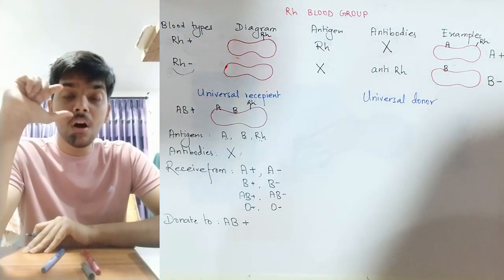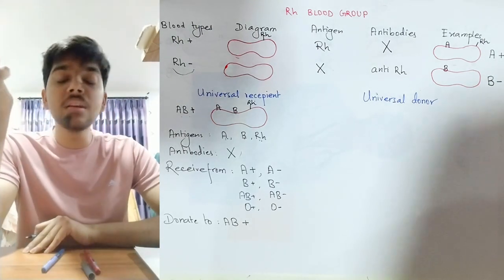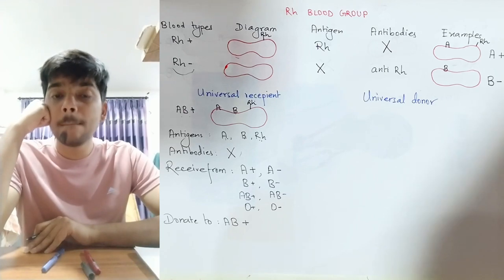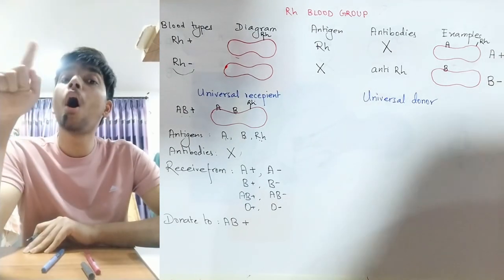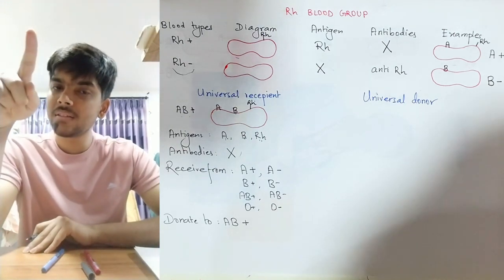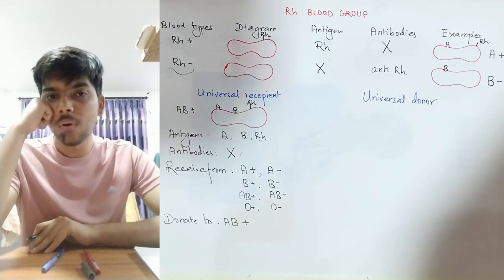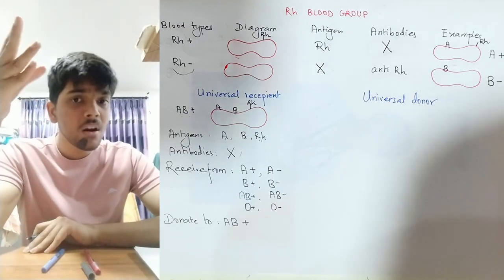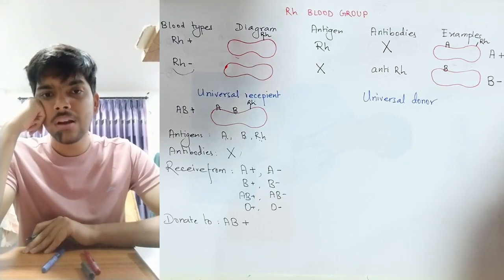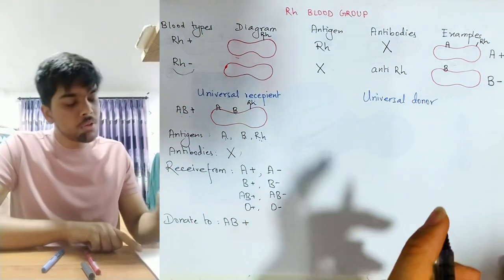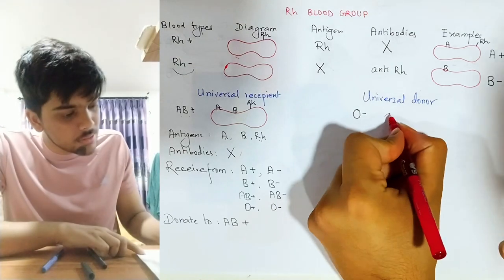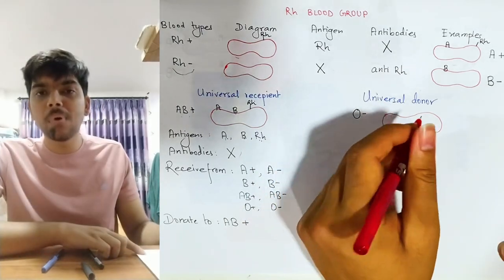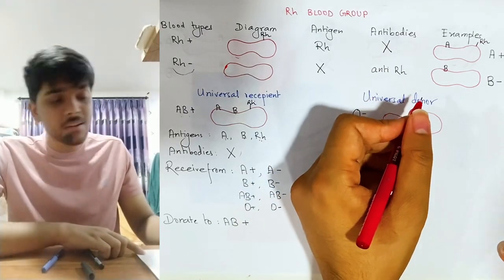The universal donor is O negative. On the surface of O negative RBCs, there is no A antigen, no B antigen, and no Rh factor. Because O negative blood has no antigens, it has antibodies against all three — anti-A, anti-B, and anti-Rh antibodies. O negative blood can only receive from O negative, because every other blood type contains at least one of these antigens, which would trigger agglutination.